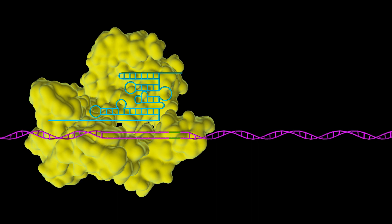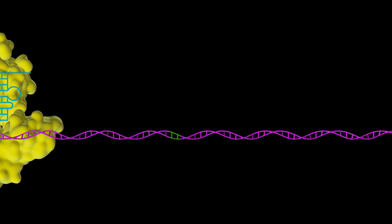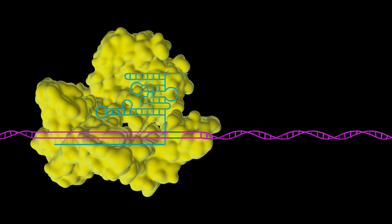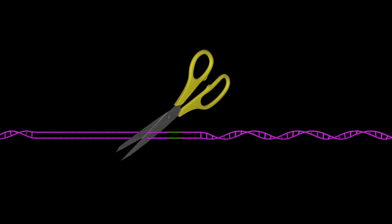If they're not complementary, Cas9 continues scanning. However, if all of the DNA bases match the targeting sequence of the guide RNA, Cas9 will cut both strands of that DNA.